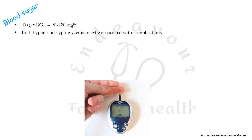Blood sugar should be maintained between 90 to 120 mg percent, and this is in contrast to the 2017 guidelines which mentioned no target range for glucose. This target is set because both hyper- and hypoglycemia may be associated with complications in patients with acute liver failure.